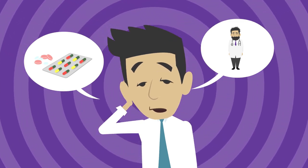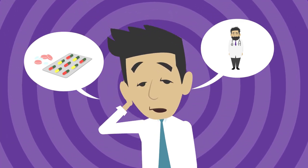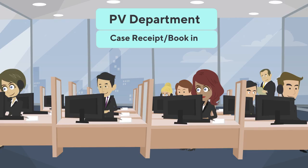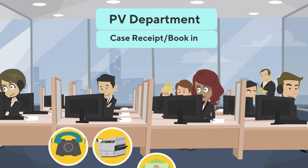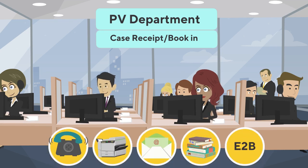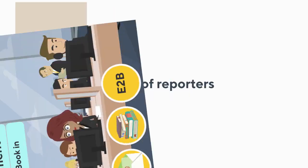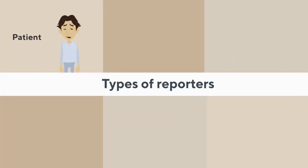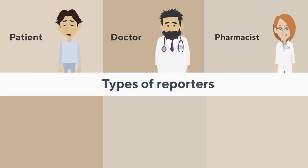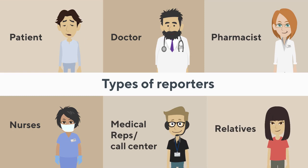The life cycle of the ICSR starts when a patient experiences an adverse event from a medicinal product. This adverse event information is then reported to the PV department via phone, fax, mails, literature, E2B, or electronic transfers. This first step is known as case receipt or book-in.